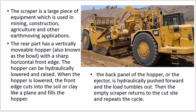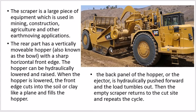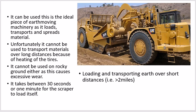The scraper is a large piece of equipment used in mining, construction, and earth-moving applications. The rear part has a vertically movable hopper — also known as a bowl — with a sharp horizontal front edge. The hopper is hydraulically lowered and raised. When the hopper is lowered, the front edge cuts into the soil like a plane and fills the hopper. The back panel or ejector is hydraulically pushed forward and the load tumbles out. The empty scraper then returns to the cut side and repeats the cycle.